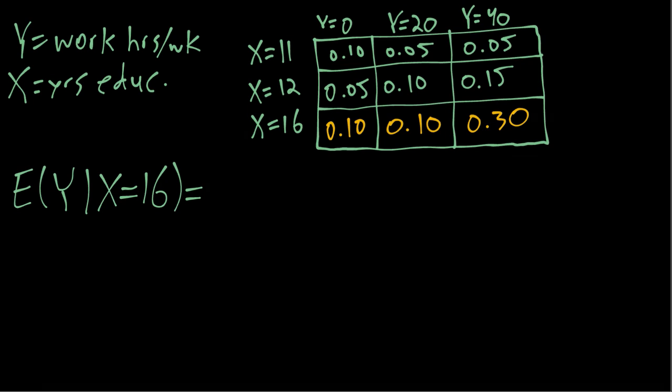Here's a slightly more complicated example of computing a conditional mean given a table showing the joint distribution of two random variables. In this case, X is years of education, and to keep it simple we'll imagine there are only three possible values: 11, 12, and 16. Then Y is how many hours per week somebody works, and again to keep it simple we'll imagine there are only three possible values of Y: 0, 20, and 40.